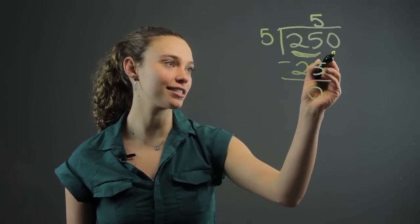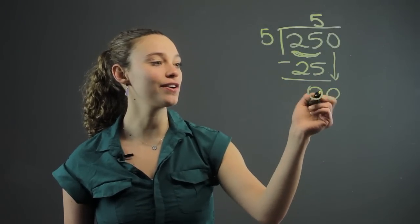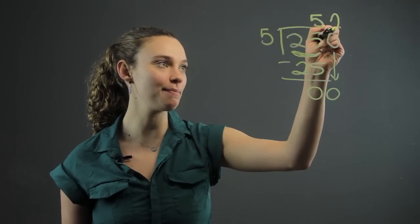Then you have to bring down the next number. Well, the next number is 0. So 5 goes into 0, 0 times. You put the 0, this next number, right above the 0.